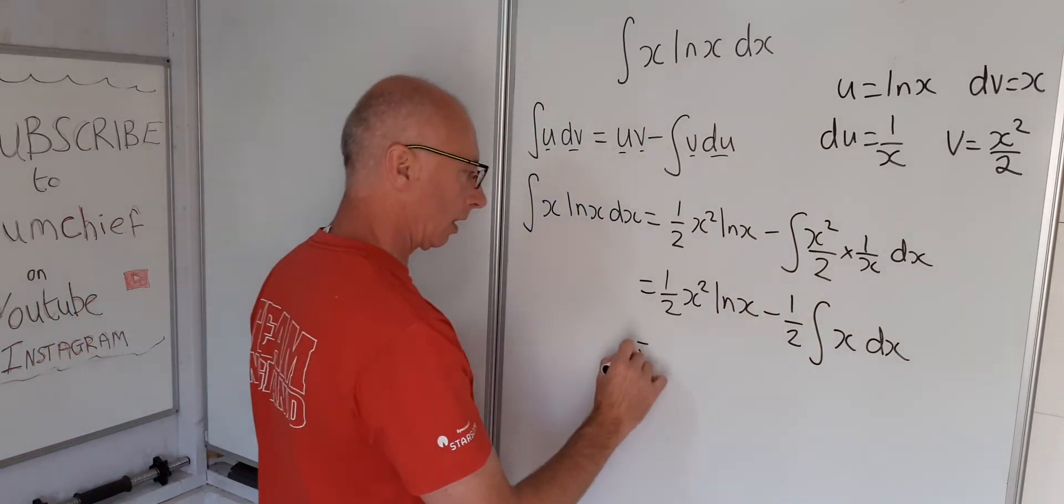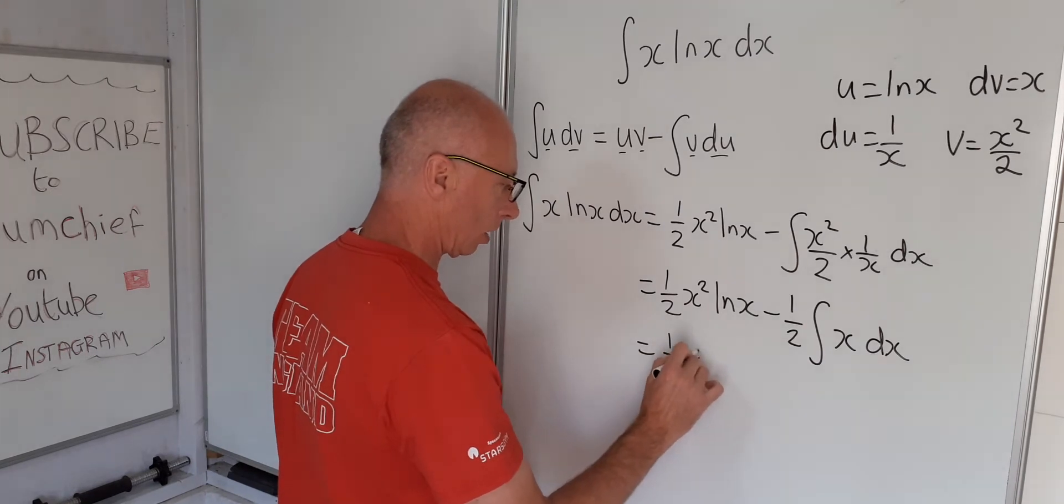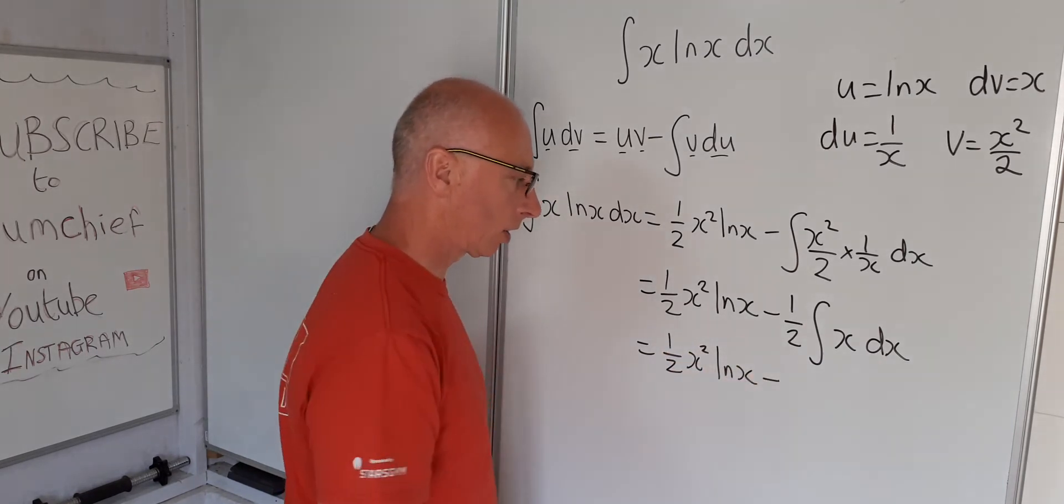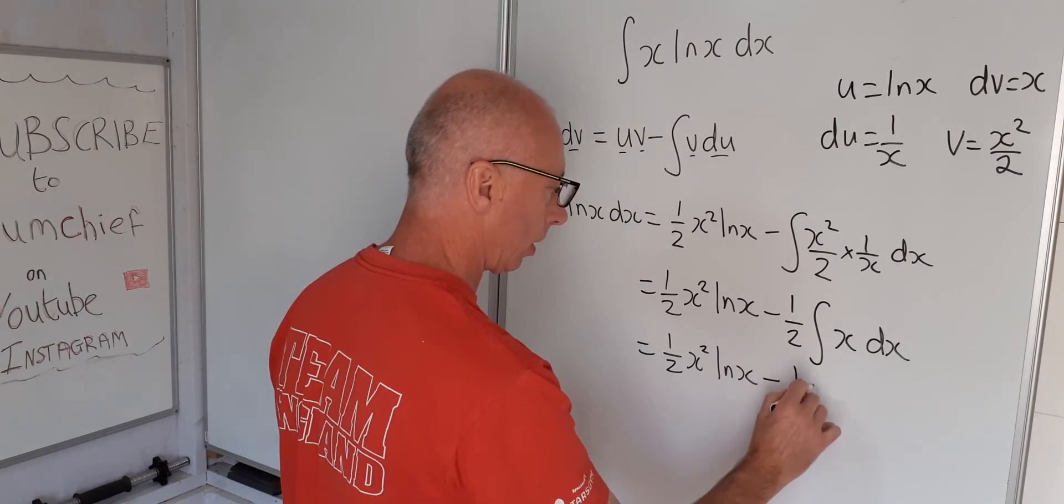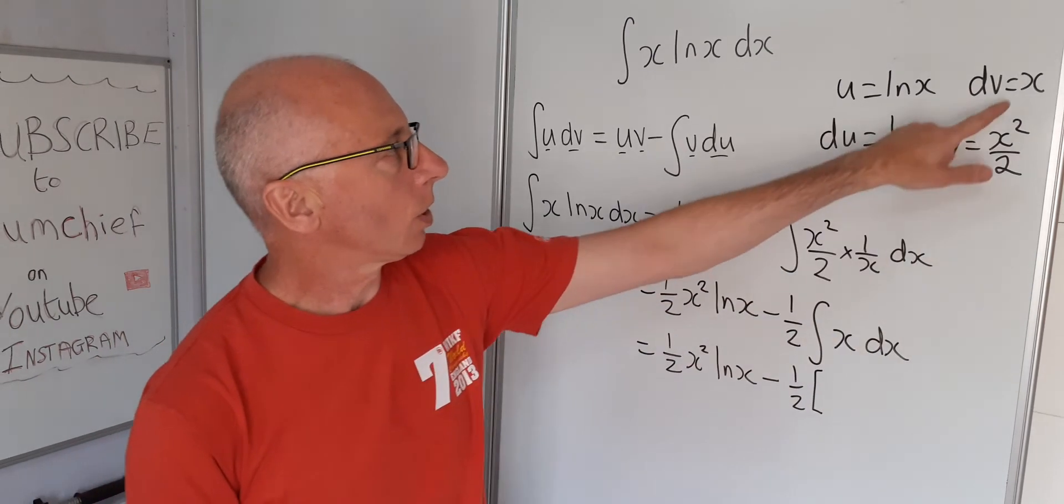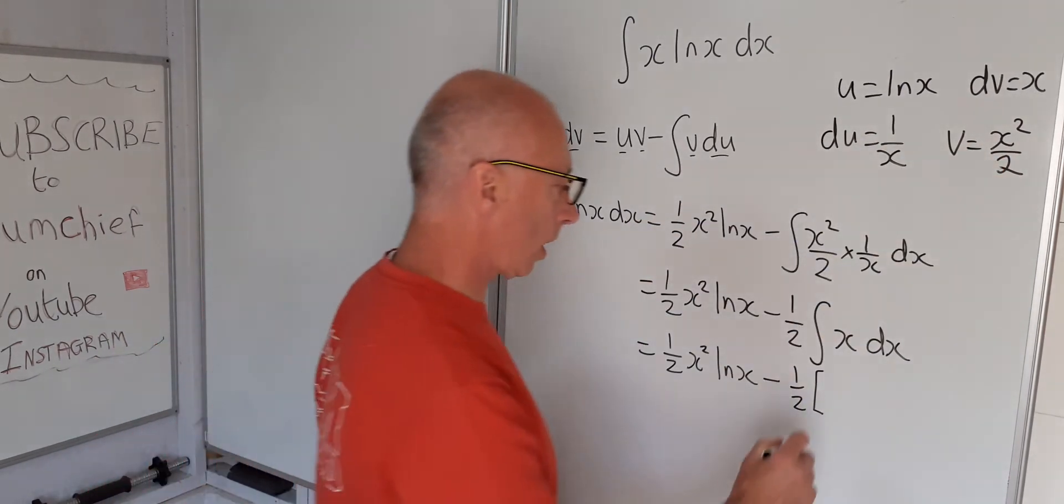Okay, again let's put in our values. Half x squared natural log of x minus one half, and then integral of x which we already wrote out here is x squared over 2.